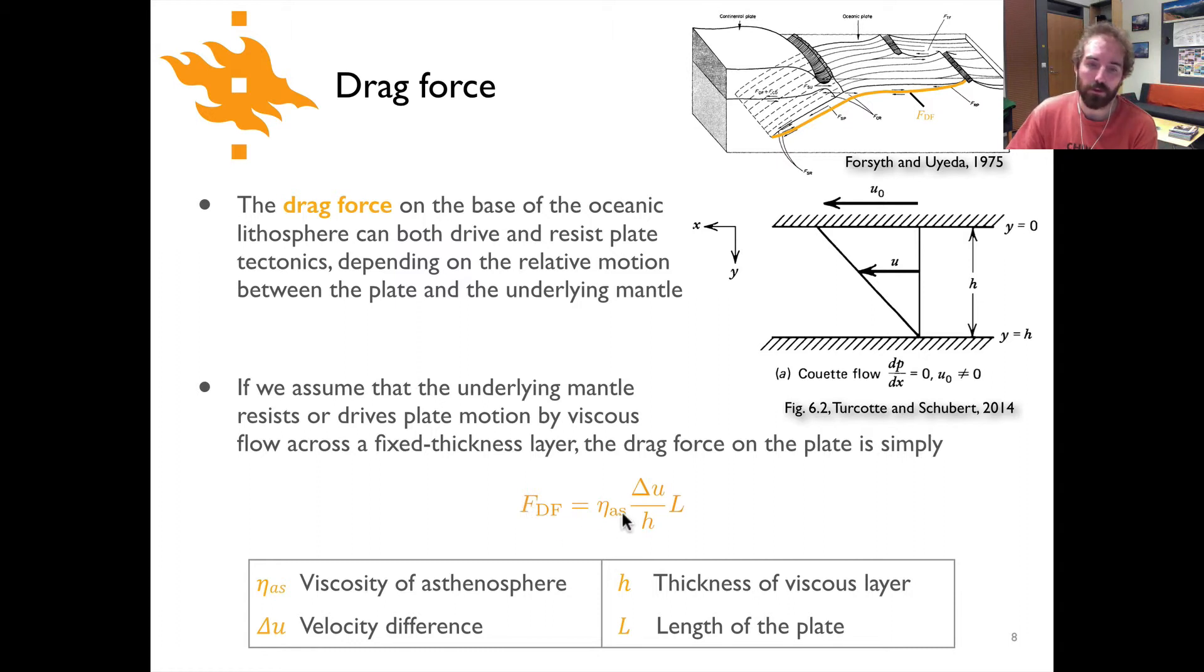And then our drag force is actually a relatively simple relationship here where we have the asthenosphere viscosity times the velocity difference between the overriding plate and the asthenosphere at depth, divided by the thickness of the viscous layer times the length of the plate. So of course this is a very simple relationship in this case and it's something kind of like the Couette flow type of motion that we might expect in terms of the velocity field.